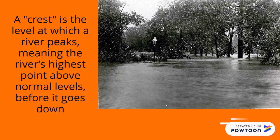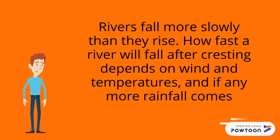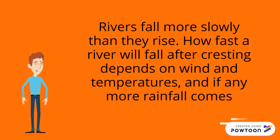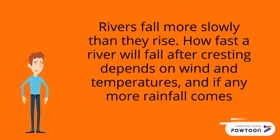A crest is the level at which a river peaks, meaning the river's highest point above normal levels before it goes down. Rivers fall more slowly than they rise, so how fast a river will fall after cresting depends upon wind, temperatures, and if any more rainfall comes.